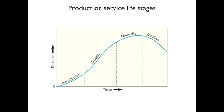Here are the stages of a product or service: introduction, growth (which tends to be fast), maturity (where demand peaks out), and decline. Typically, decline occurs because a new product comes along and replaces the old one — we call that disruptive technology.